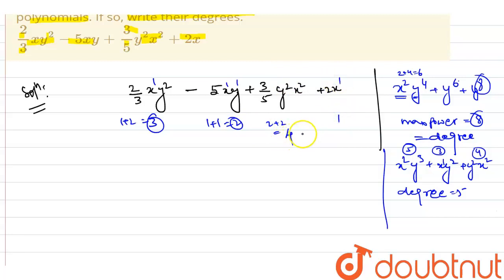So which is the greatest power? Greatest power is four. So our degree, degree of polynomial is equal to four. And this will be our answer.